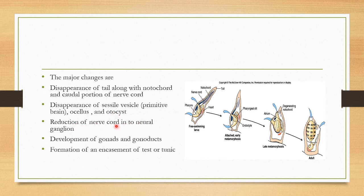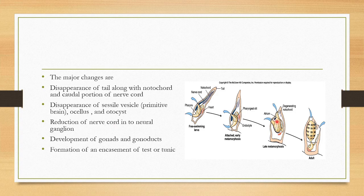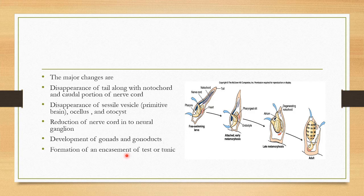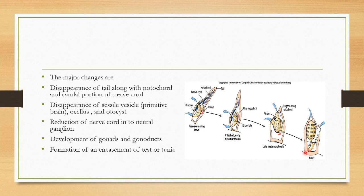Reduction of nerve cord into neural ganglion. So this is the neural ganglion. This well-developed nervous system simplifies into a neural ganglion here. And development of gonads and gonoducts. And formation of an encasement of test or tunicin. There will be a tough covering over it called tunicin.